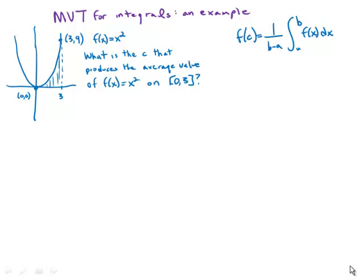In this video we show an example of the mean value theorem for integrals. Suppose we have the function f of x equals x squared and we want to find the c that produces the average value of this function on the interval from 0 to 3.